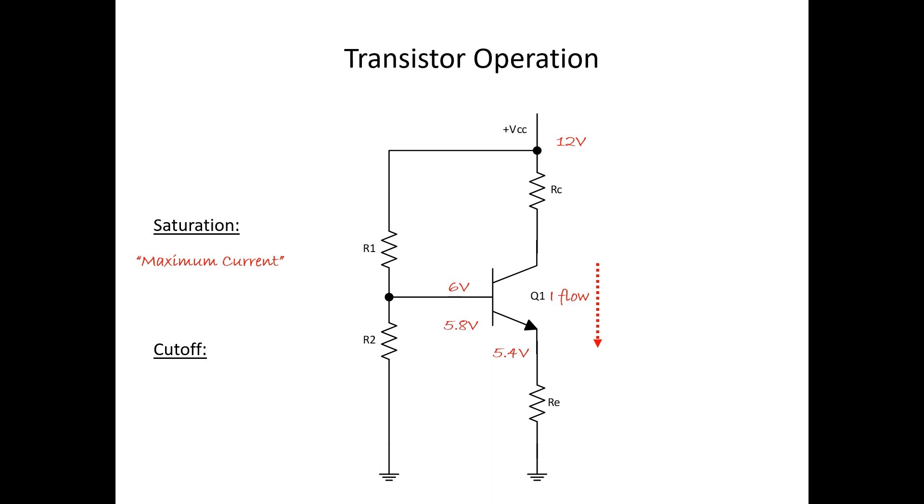And eventually, if we keep decreasing that value enough, we'll actually cause the transistor to stop conducting. When this happens, it's known as cutoff or no current flow.